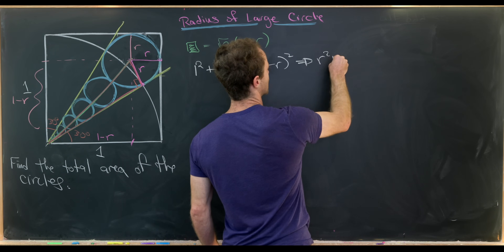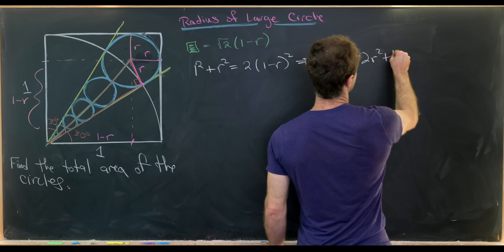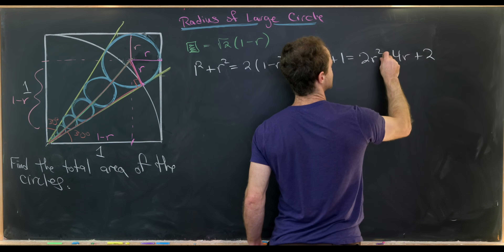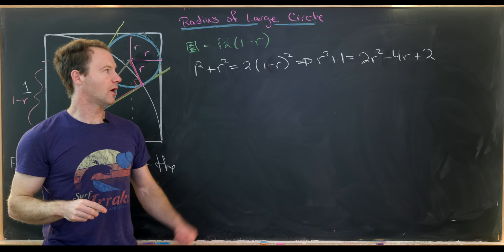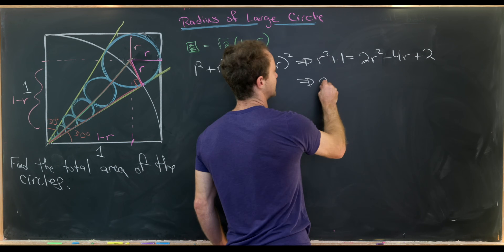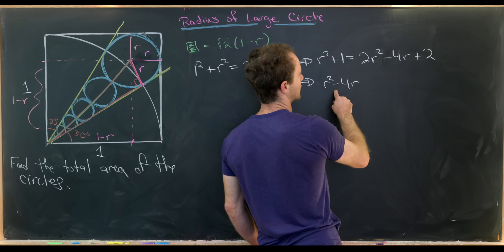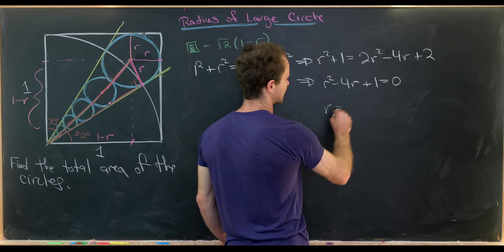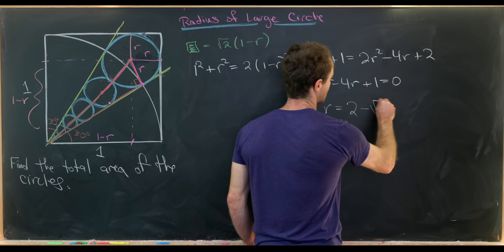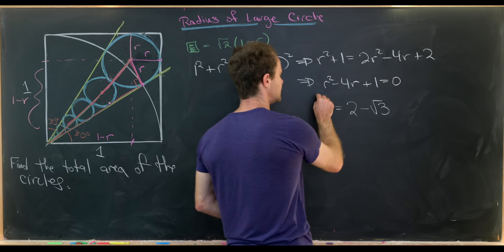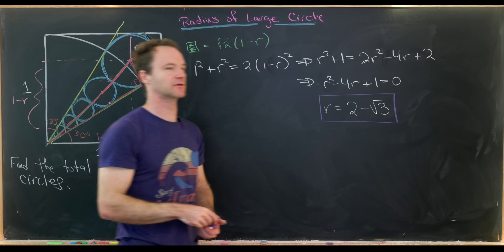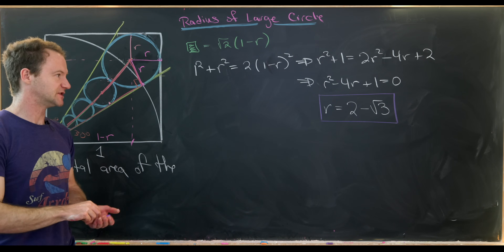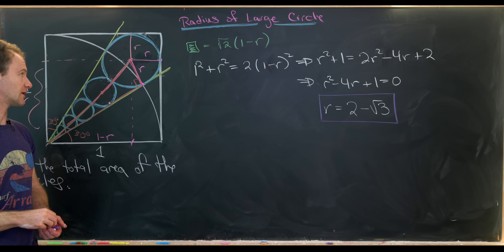This gives us r squared plus 1 equals 2r squared minus 4r plus 2, after multiplying out. Moving things around, we get r squared minus 4r plus 1 equals 0. Solving with the quadratic formula, we end up with 2 plus or minus the square root of 3. You can check that 2 plus the square root of 3 produces a circle that is too large to fit inside the square, so we keep the radius r = 2 minus the square root of 3.